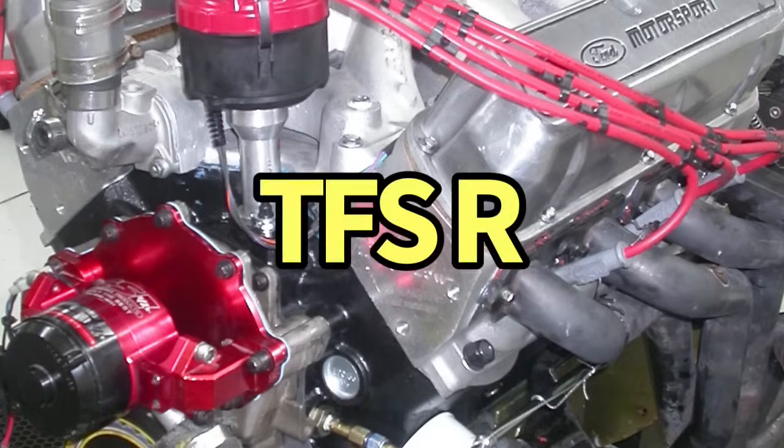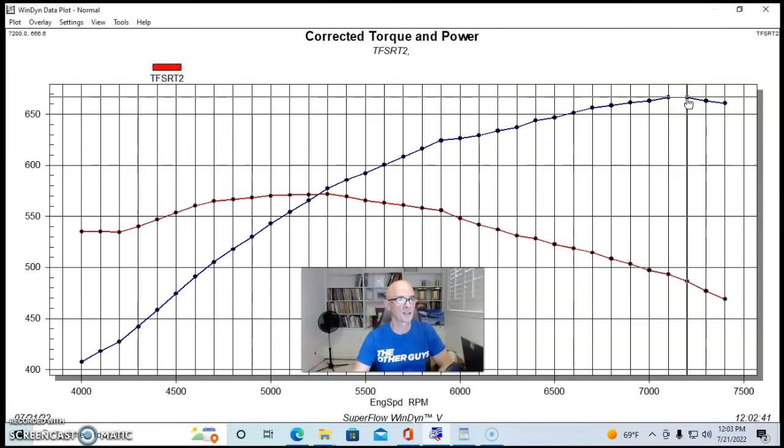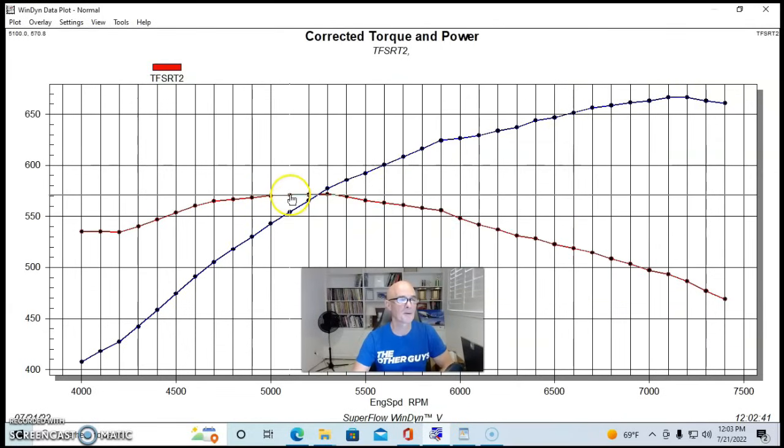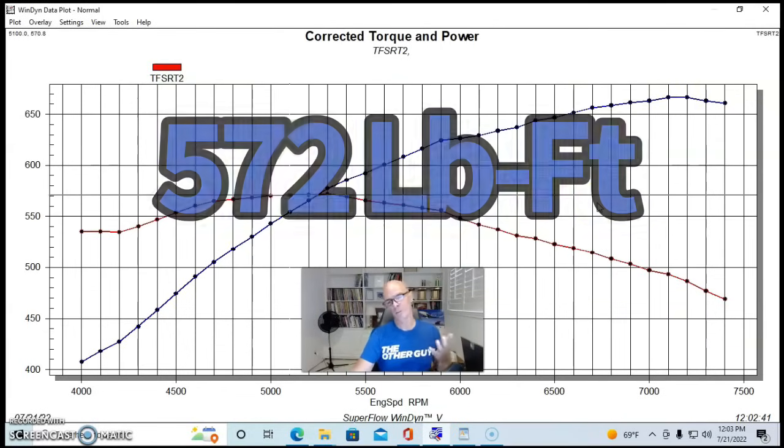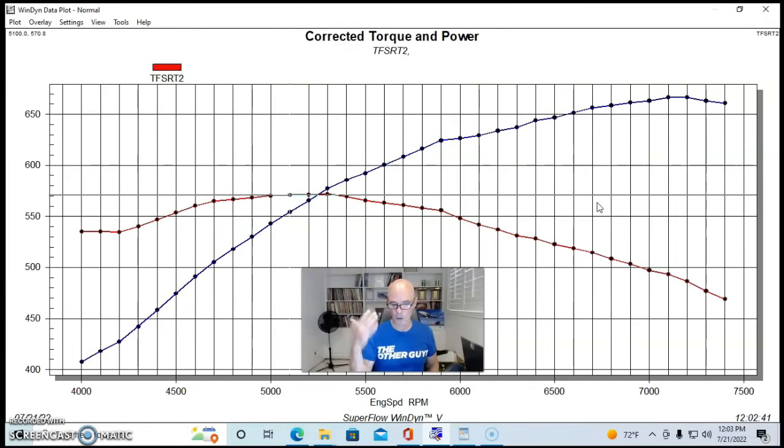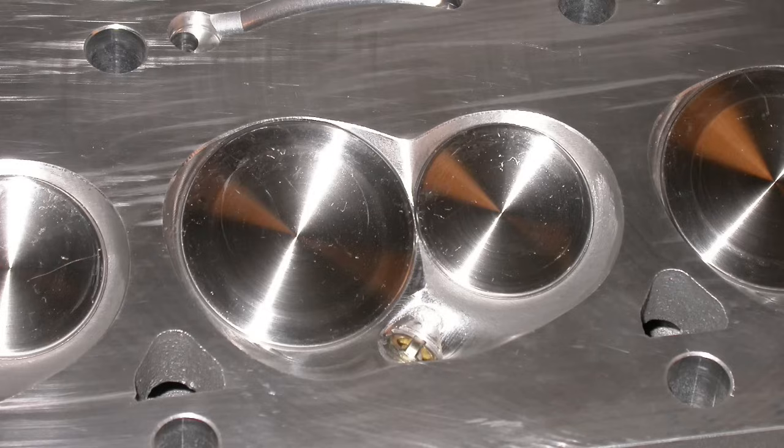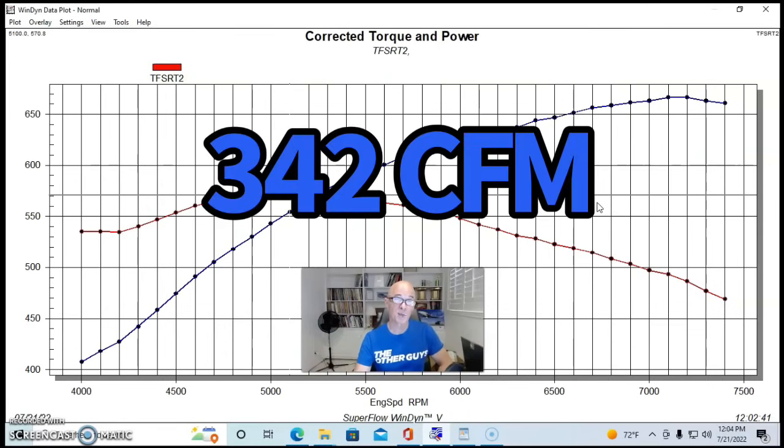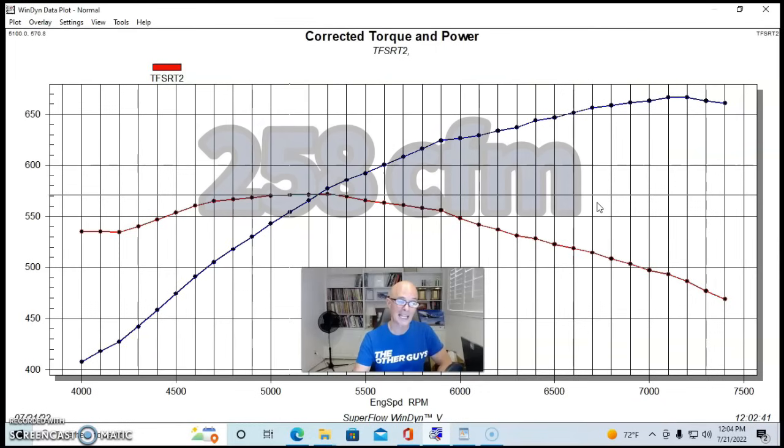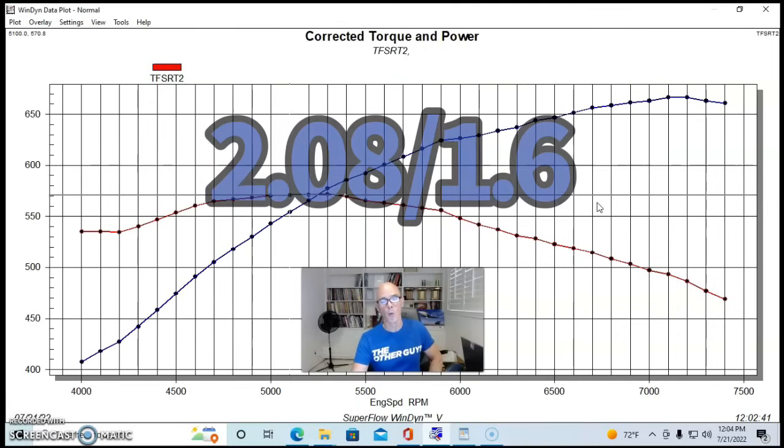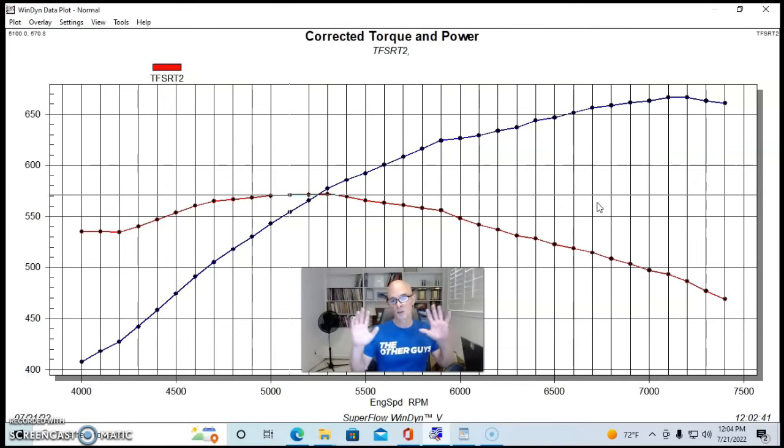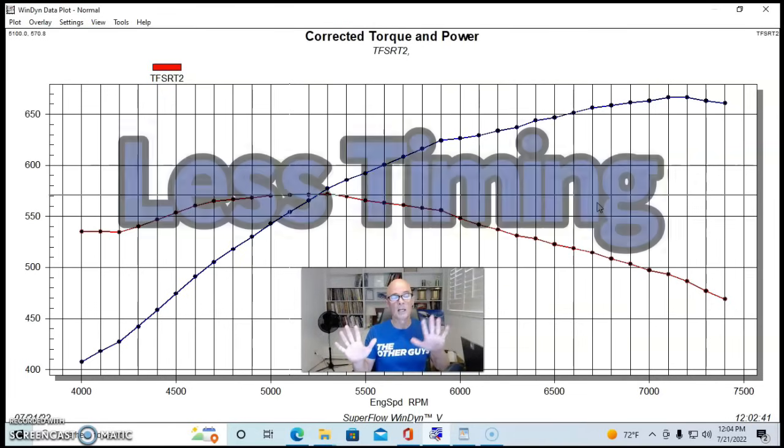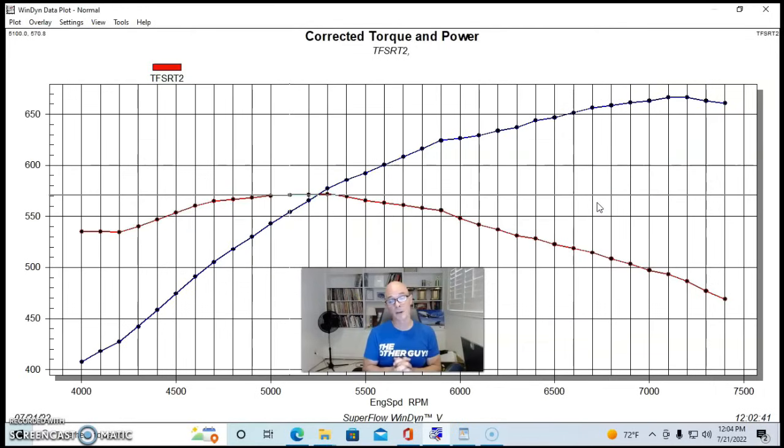So let's jump right in and get to our Trick Flow Twisted Wedge R heads on our 427 that produced 666.6, 667 horsepower and 572 foot-pounds of torque. You can see good curve, made good power. Our Twisted Wedge R heads had a 62cc chamber, they had a 12.13 to 1 static compression ratio. The peak flow on the Trick Flow heads, they offered 342 CFM on the intake and 258 CFM on the exhaust. The intake port measured 225cc's and they were equipped with a 2.08/1.6 valve package. Interestingly enough, the Twisted Wedge R heads actually wanted a degree and a half or so less timing than the other heads in this group.